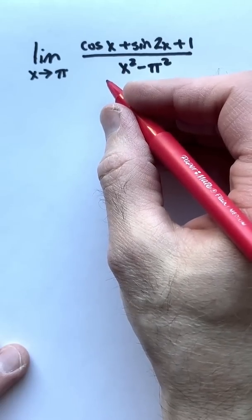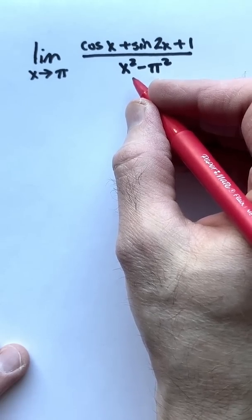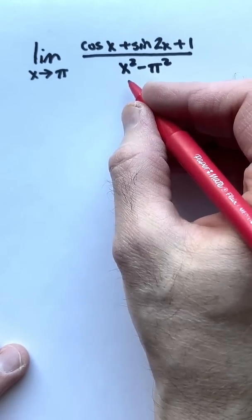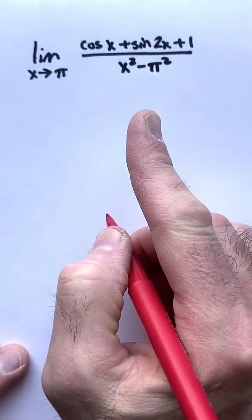This AP calculus limit problem is kind of tricky. It looks like we might have to use L'Hopital's rule twice because of the x squared in the denominator. But remember, you always have to check whether this is an indeterminate form or not.